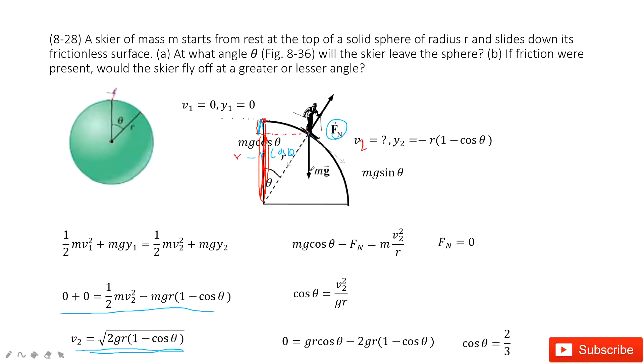So we can project the gravity in two components, Mg sine theta and Mg cosine theta. In the direction pointing to the center, we have Mg cosine theta minus this F equal to mv2 square divided by R. This is the central acceleration, v2 square divided by R.